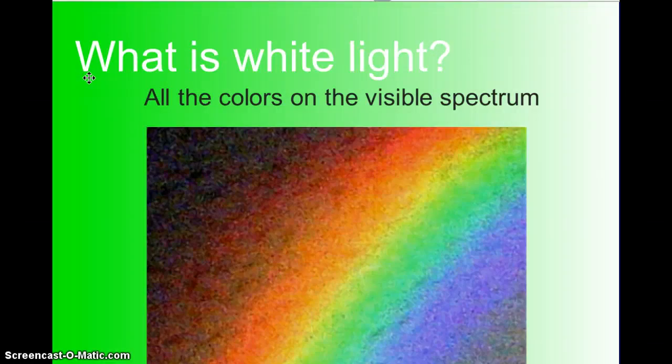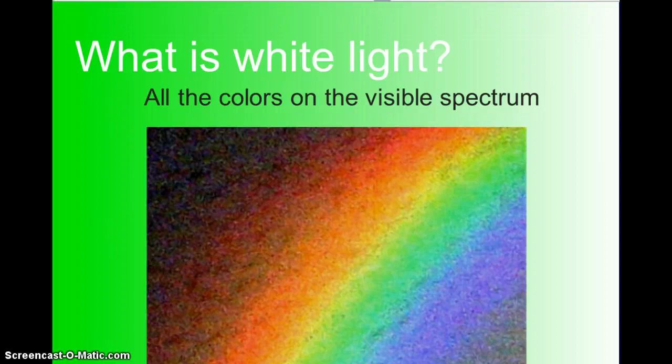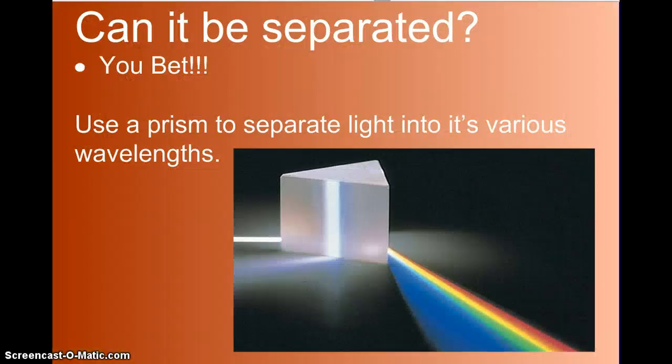So, what is white light? White light, we know, is all of the colors of the visible light spectrum. Red, orange, yellow, green, blue, indigo, and violet. We call this ROYGBIV. So, can it be separated? Yes, it can. And it can happen naturally. Sometimes we can see white light separated by prisms into its various wavelengths and frequencies.